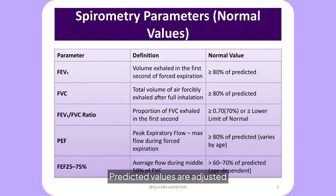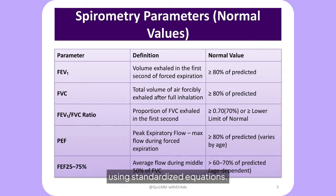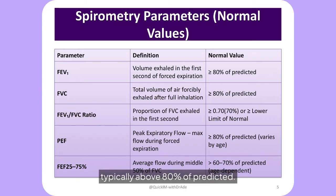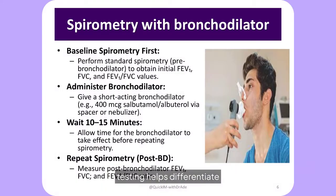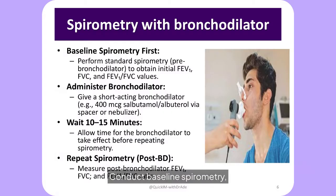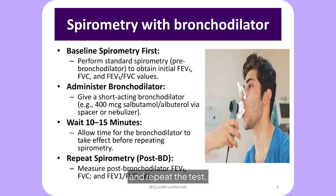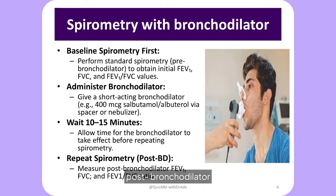Predicted values are adjusted for age, sex, height, and ethnicity using standardized equations. FEV1 and FVC normal values are typically above 80% of predicted. Spirometry with bronchodilator testing helps differentiate between asthma and COPD: conduct baseline spirometry, administer a bronchodilator, and repeat the test. Changes in FEV1 and FVC values post-bronchodilator provide insights into airway reversibility and obstruction.